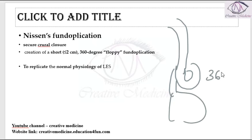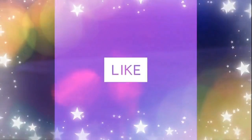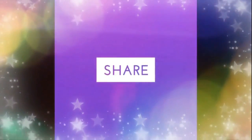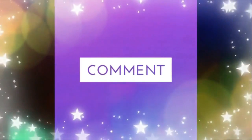When you wrap the fundus around the esophagus 360 degrees, the sphincter pressure increases and it replicates normal lower esophageal sphincter function. This is Nissen Fundoplication, which is done for gastroesophageal reflux disease. Thank you for watching.